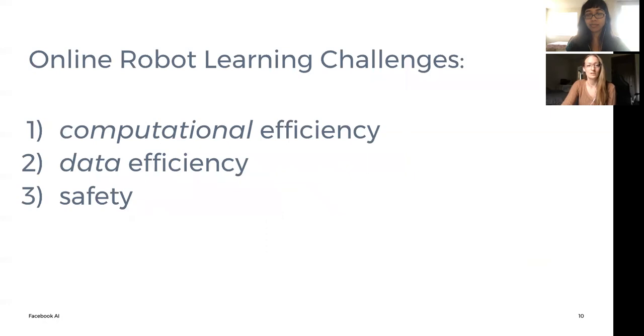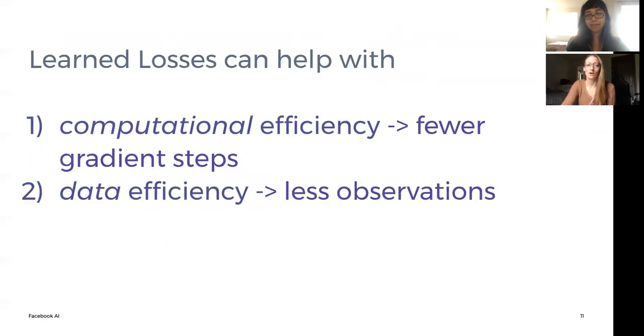The online adaptation of a robot controller needs to be computationally efficient, data efficient, and safe. Our work particularly helps with the first two. Instead of using the standard MSE loss to adapt our controller, we use learned losses. When adapting the controller with our state-dependent loss, fewer gradient steps and fewer observations are needed.